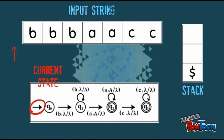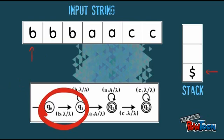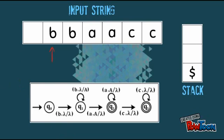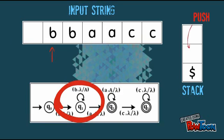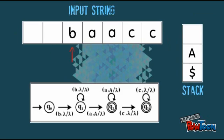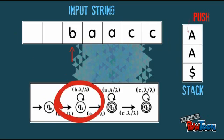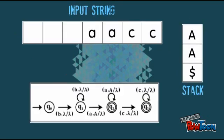Current state. Read the first string, push lambda. Next, read the second string, push A. Then, read the third string, push A. Read the fourth string, pop A.